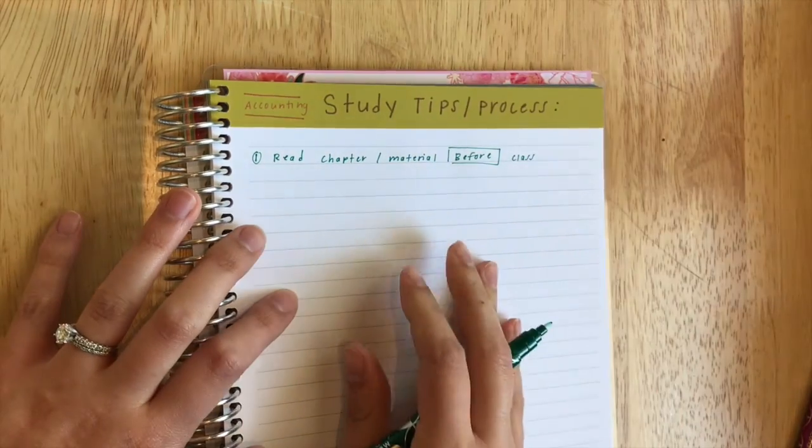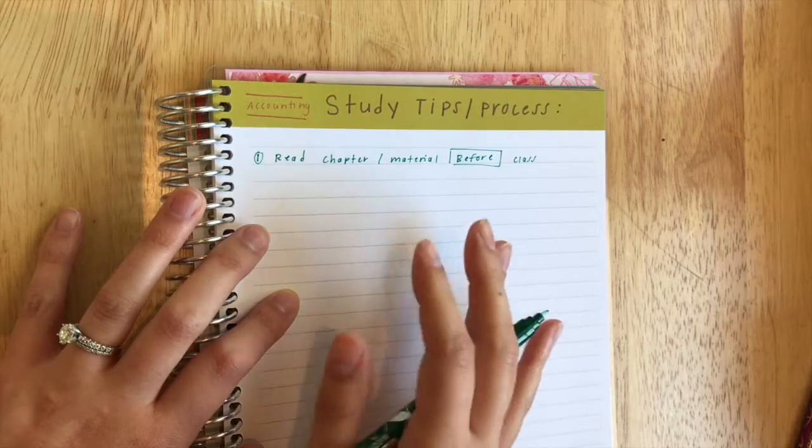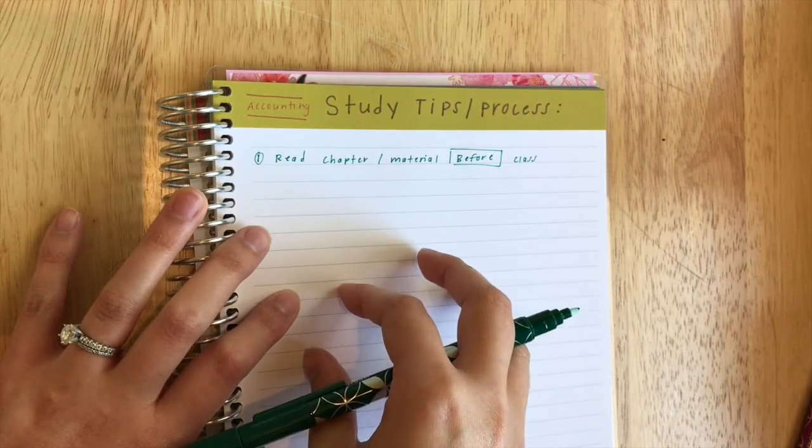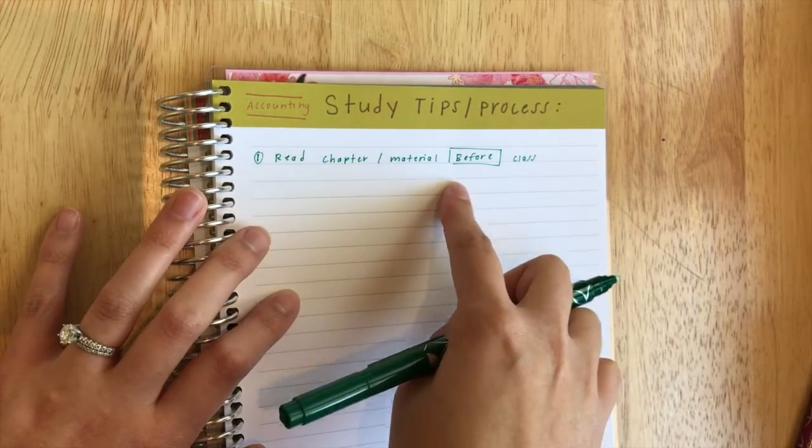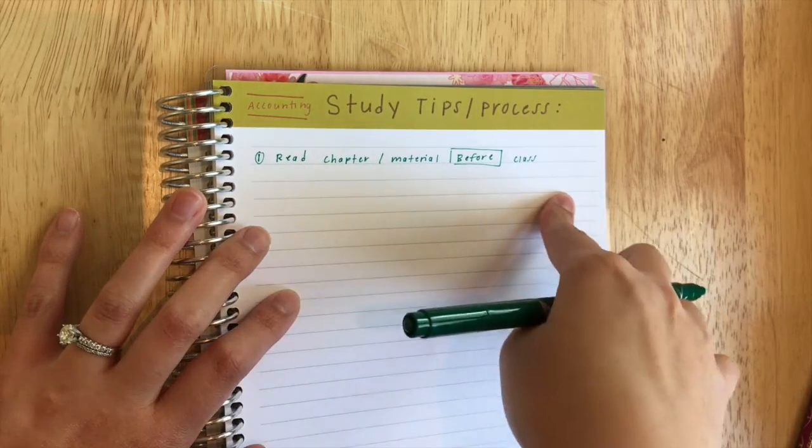The key to this is you do it before - before class. So what normally happened was every week we would go over a chapter or two chapters, and so that weekend before I had class I would read the chapter that we were going to be covering.